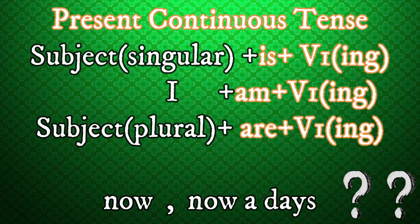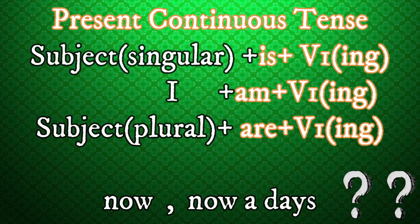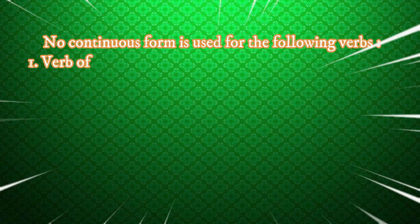We use helping verbs is, am, and are with the first form of the verb plus -ing. Is is used with singular subjects, am is used with I, and are is used with plural subjects. The words 'now' and 'nowadays' are tag words by which we can recognize present continuous tense.